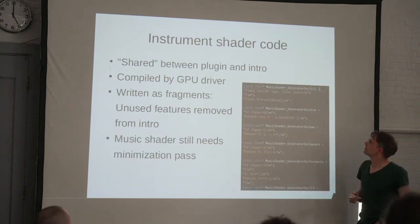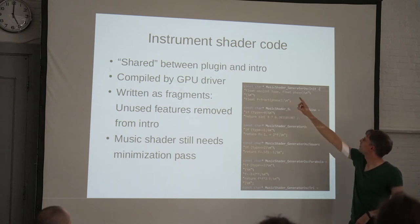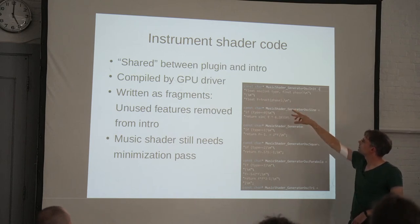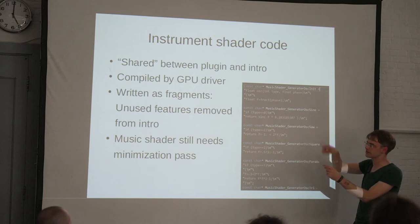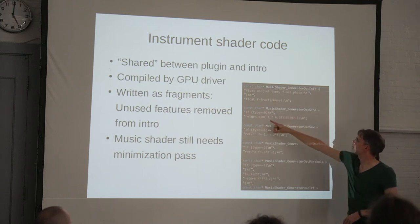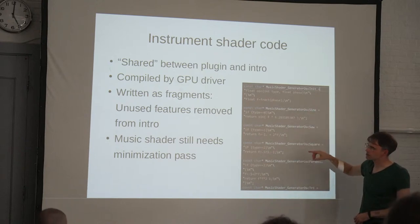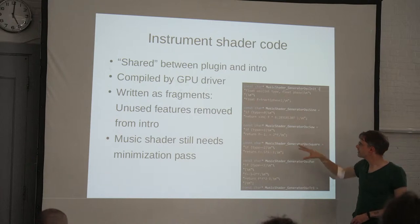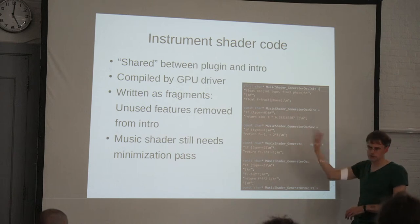The actual shader code looks like this - for the oscillators, your phase is just your time. Every oscillator is like a cycle so you take the fractional part. This is for a sine wave; this is for the sawtooth. It's written as fragments because in an intro, if a feature is not used it's not included in the shader - if a song has no square waves, that code is left out. The music pass still needs to be minimized.